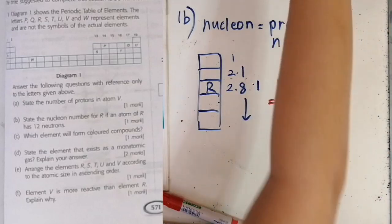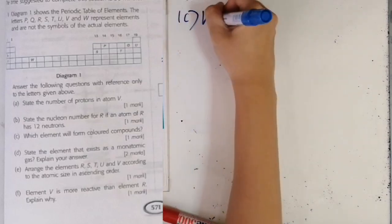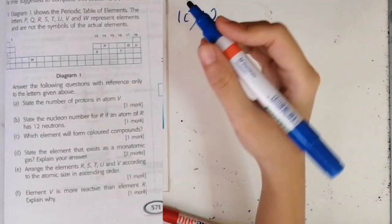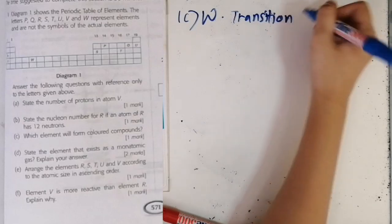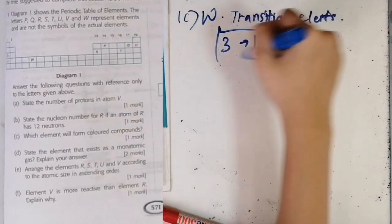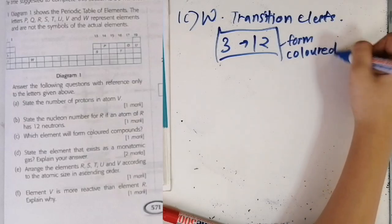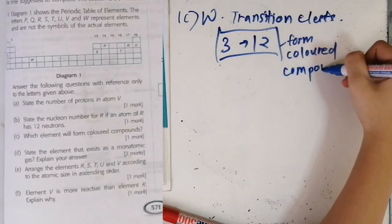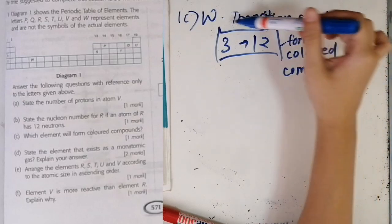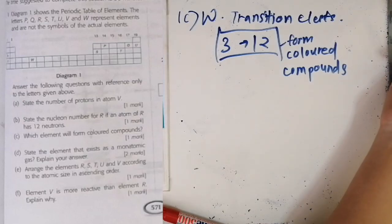Now we move on to 1c: which element will form colored compounds? The element that forms colored compounds is W. The reason is that W is a transition element. Transition elements are those found from group 3 to group 12. They have a distinct property: they form colored compounds. Sometimes there may be more than one transition element — both W and V could be transition elements and both can form colored compounds.